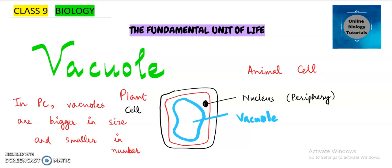This is very important point to be written. Now let's talk about animal cell. Suppose this is our animal cell. The number of vacuoles will be higher in comparison to the plant cell. Here you can see that I have drawn three vacuoles.